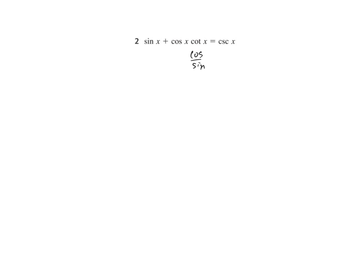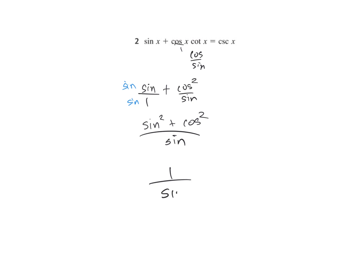We're going to continue doing these things. Let's change everything to cosines and sines. Cotangent is the same as cosine over sine. When we multiply those together, we get sine plus cosine squared over sine. We need a common denominator, so multiply by sine over sine again, giving us sine squared plus cosine squared all over sine. Sine squared plus cosine squared is 1, so 1 over sine is cosecant.